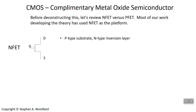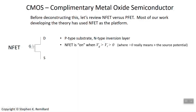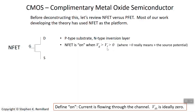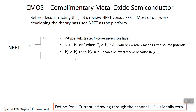Let's first go through the individual transistors, starting with the NFET. It has a p-type substrate — it's normally p-type — but when the gate voltage is high, you get an inversion layer, and that inversion layer will be n-type; hence it's called an NFET. The NFET is on — that is, you have an inversion layer — when the gate voltage is greater than the threshold voltage, which is positive relative to the source.